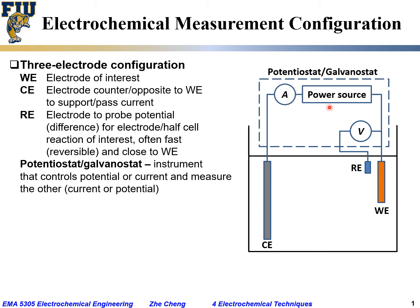Between the reference electrode and the working electrode, we have the voltmeter to measure the potential or voltage difference between the reference and working electrodes. This setup that includes the power source, amperometer, and voltmeter together gives us the so-called potentiostat or galvanostat.